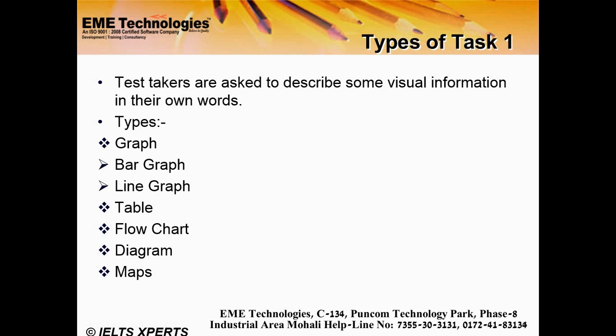In IELTS Academic Writing Task 1, you can have various types of visuals. You can use a table, flowchart, diagram, maps, etc. In the General Training version, you can use a letter, but in Academic you write a report.